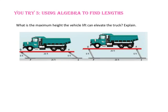Pause the video and do you-try number 3. What is the maximum height the vehicle lift can elevate the truck? Since the length of segments QP and RS — the arms — are 6 feet, the maximum height the vehicle lift can be raised is 6 feet. That would be when the arms are vertical, or perpendicular to the ground.